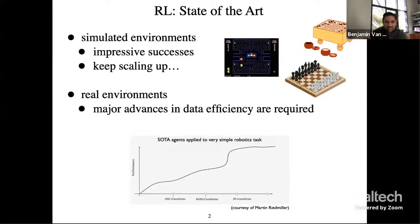This cartoon plot was produced by a friend of mine who's a roboticist, Martin Reed Miller. He plays with reinforcement learning agents, and he drew this to illustrate how long state-of-the-art reinforcement learning agents take to develop competence in the simplest of robotics tasks, like stacking blocks. It takes about a year of real-time operation with a real robotic hand to gain any reasonable level of competence.